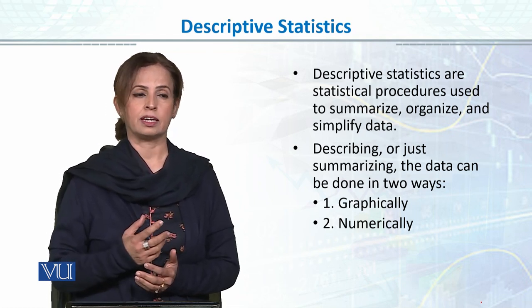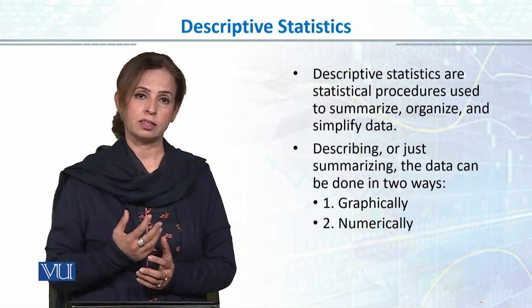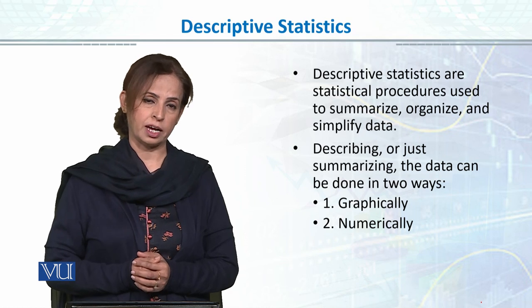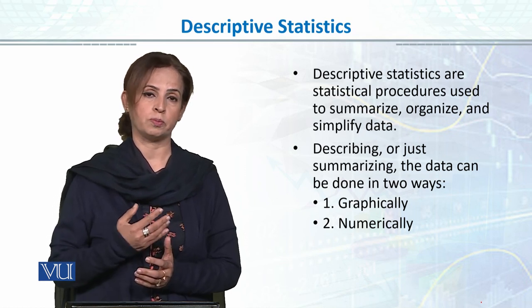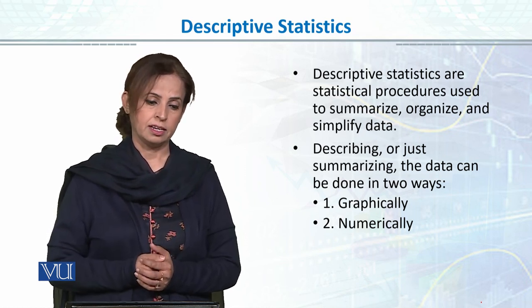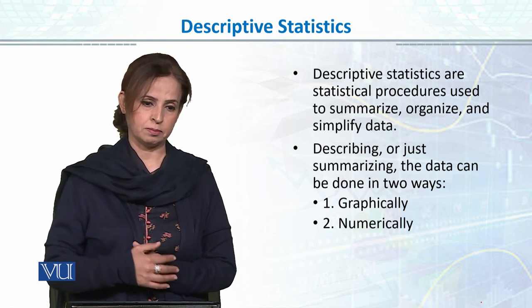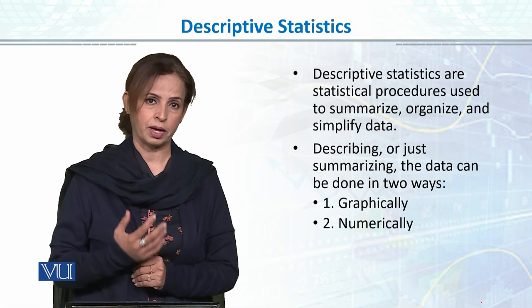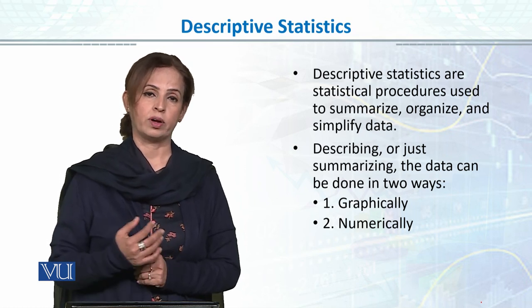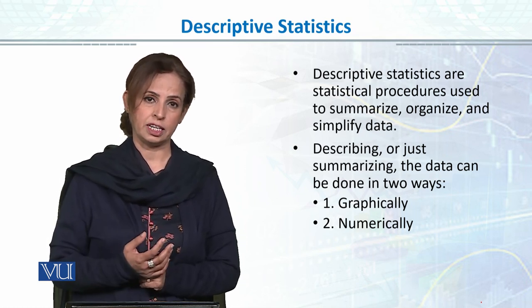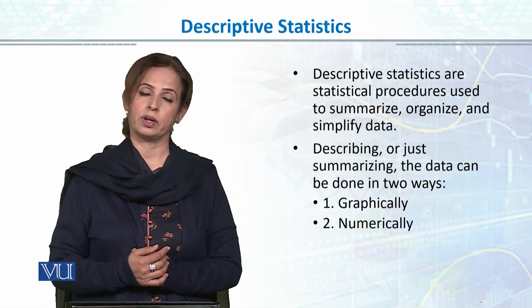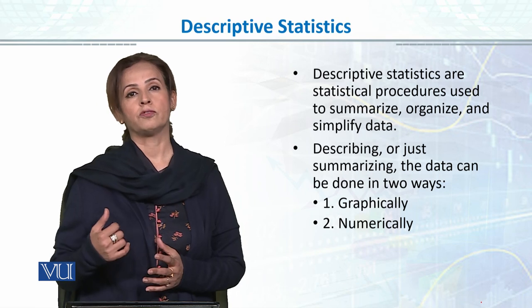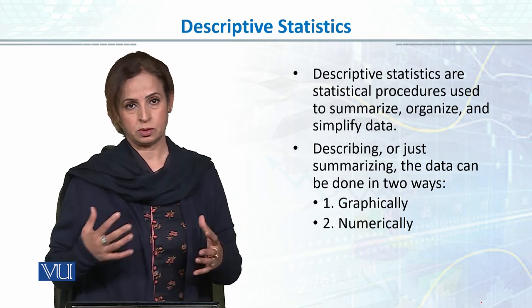First, we have data. If I have 1,000 people asked about COVID or if they follow SOPs or not. Or let's suppose that we have had an admission test and 1,000 people appear in entry test, out of 30, 1,000 people have a score. So I have 1,000 data points ranging from 1 to 30 on the test.